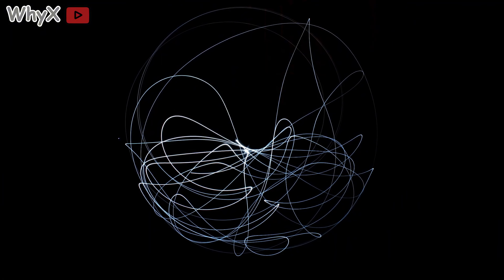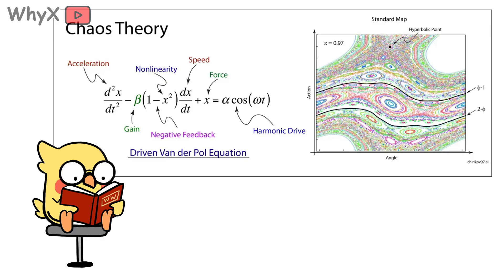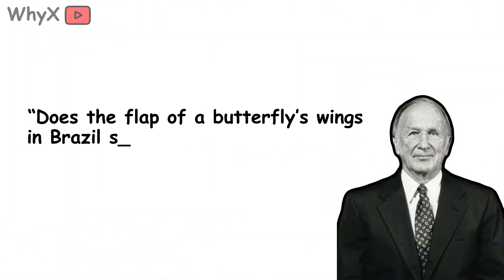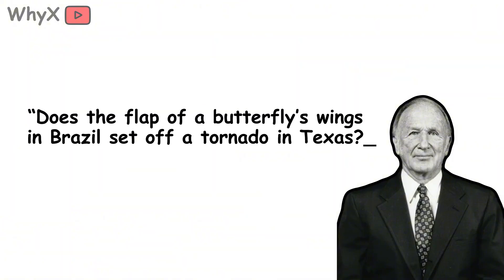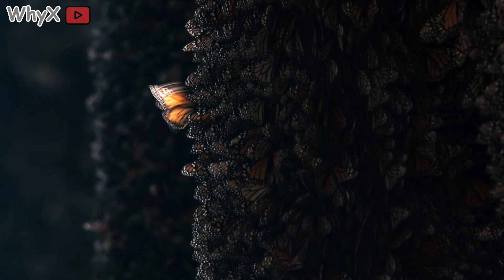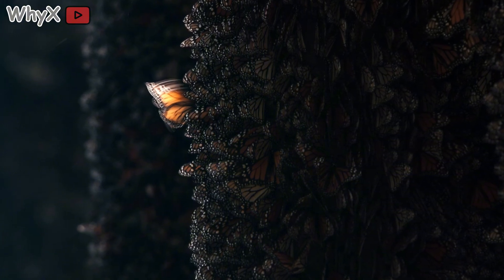This tiny rounding error launched what we now call chaos theory — the study of how small differences in initial conditions can produce vastly different outcomes in non-linear systems. Lorenz famously asked in a 1972 talk: does the flap of a butterfly's wings in Brazil set off a tornado in Texas? The metaphor stuck. The image of a delicate insect influencing a massive storm captured both the fragility and the power of chaotic systems.